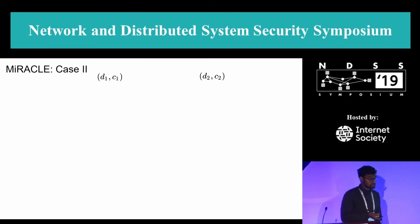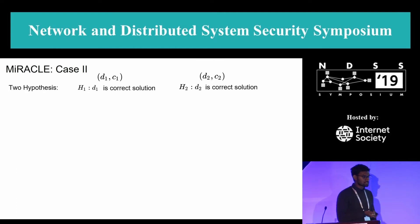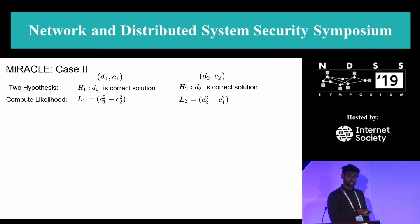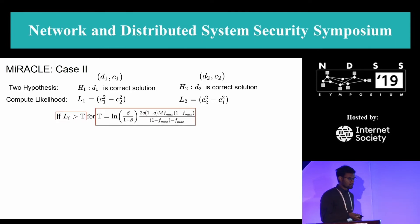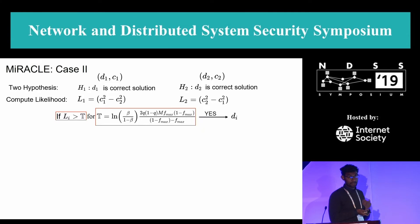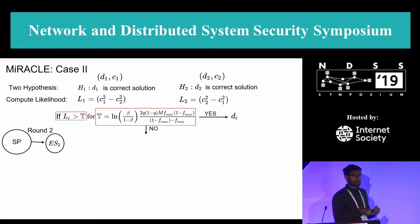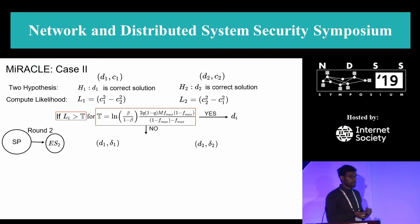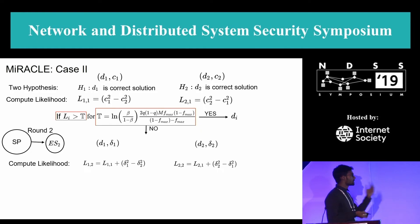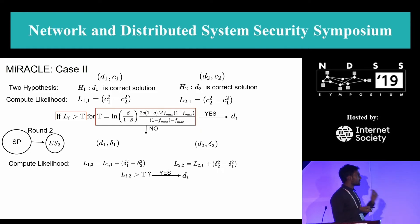For case two with solutions D1 and D2 and counts C1 and C2, Miracle defines two hypotheses — H1: D1 is correct, H2: D2 is correct — and computes the likelihood for each using a formula. If the likelihood of a given solution exceeds a threshold, it is declared correct. Otherwise, Miracle goes to round two: a new ES2 is selected to re-execute the contract. They submit solutions with counts delta1 and delta2, likelihoods are recomputed, and the test runs again. If it passes, the solution is declared; otherwise the process continues to further rounds.